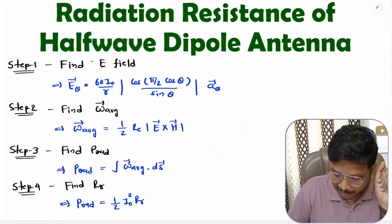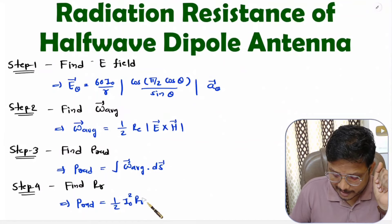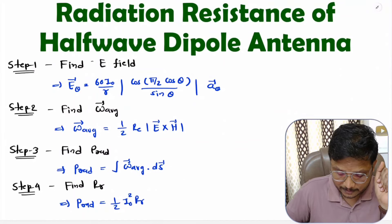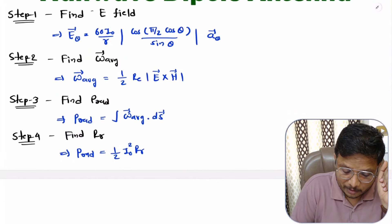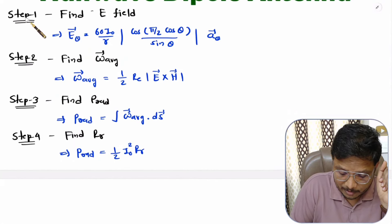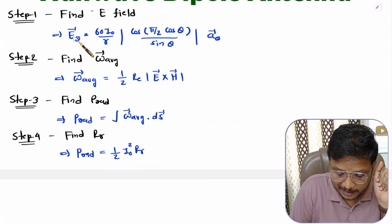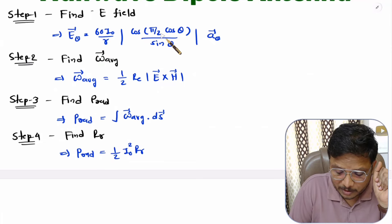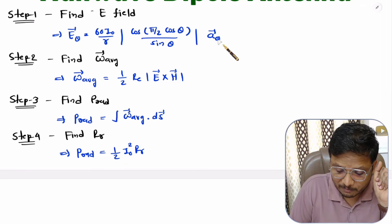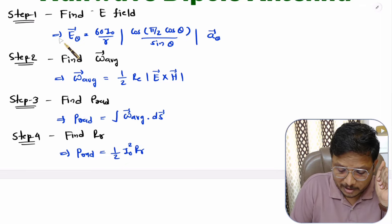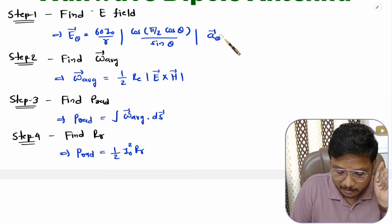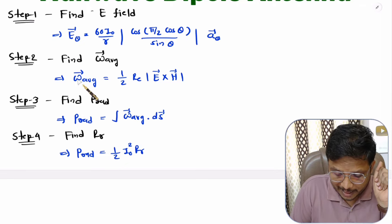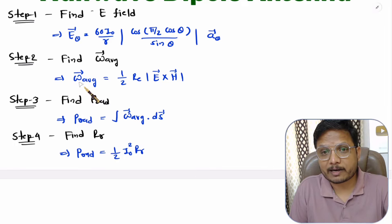In step one, the electric field is E_theta = (60·I₀/r) · [cos(π/2 · cosθ) / sinθ] in the direction of a_theta. Based on this electric field we will identify average power density, which is one-half of the real component of E cross H.